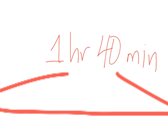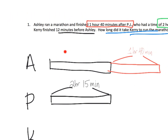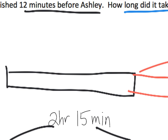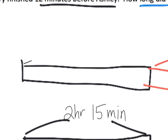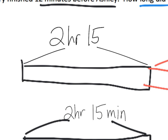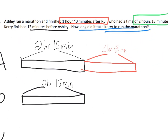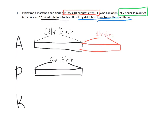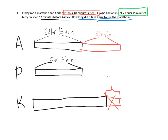And then it gets extended by an hour and 40 minutes. That portion of Ashley's diagram is the exact same as PJ — 2 hours 15 minutes. And then it says Carrie finished 12 minutes before Ashley. So Carrie's tape diagram is going to be exactly as long as Ashley's minus 12 minutes.